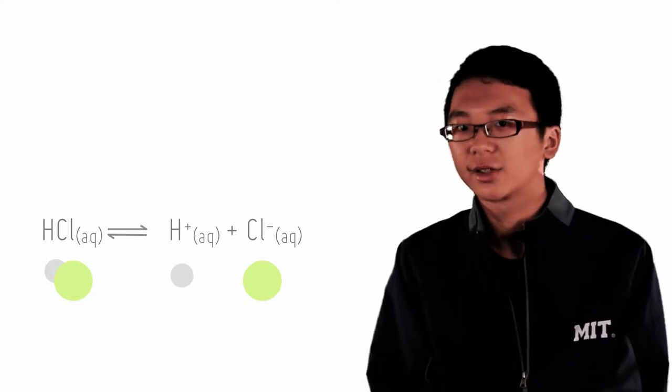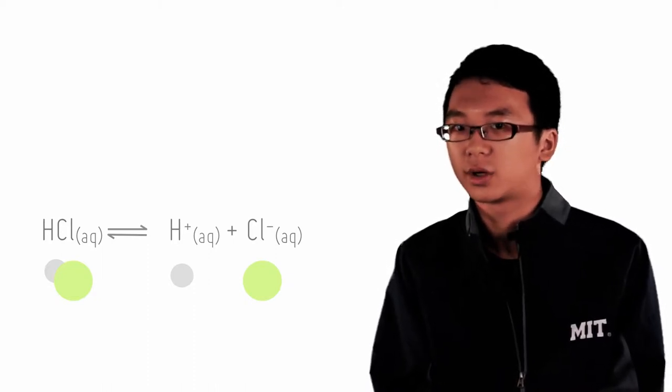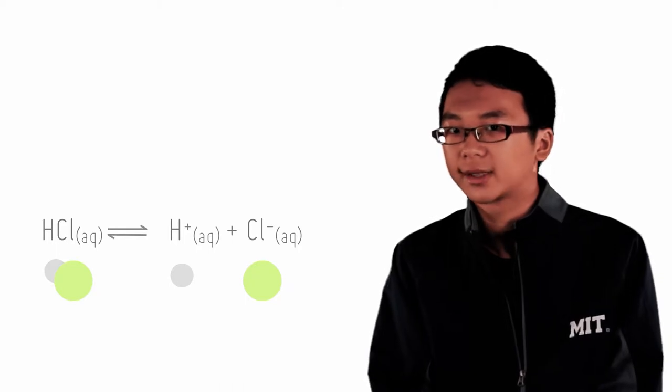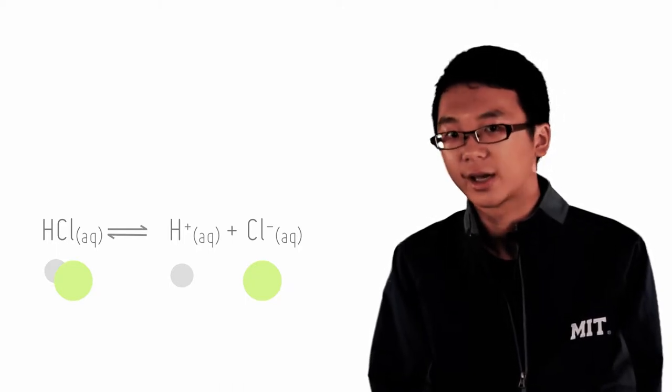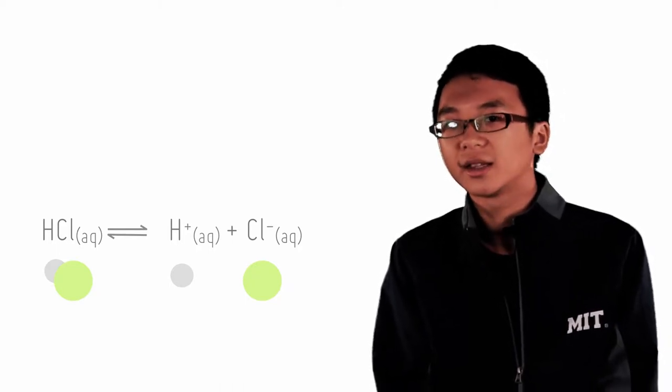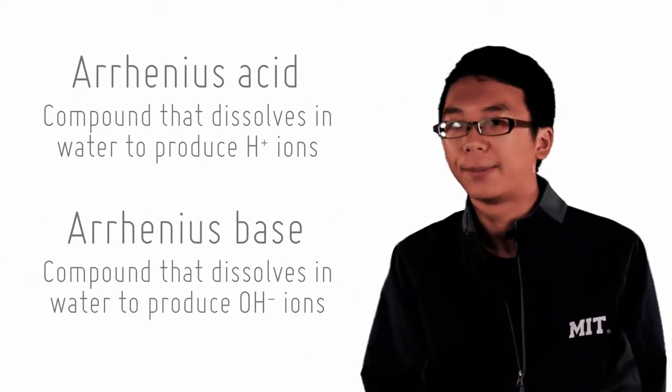What about a base, say sodium hydroxide? It dissolves in water to form hydroxide ions. So the definition of a base can be a compound that releases hydroxide ions when dissolved in water. And this is the Arrhenius definition of an acid and base.